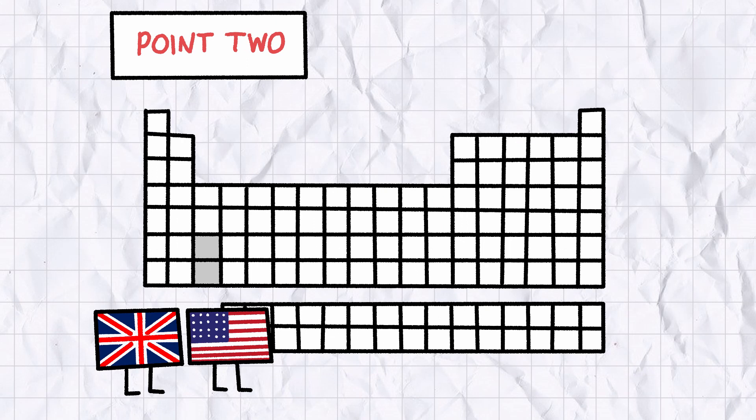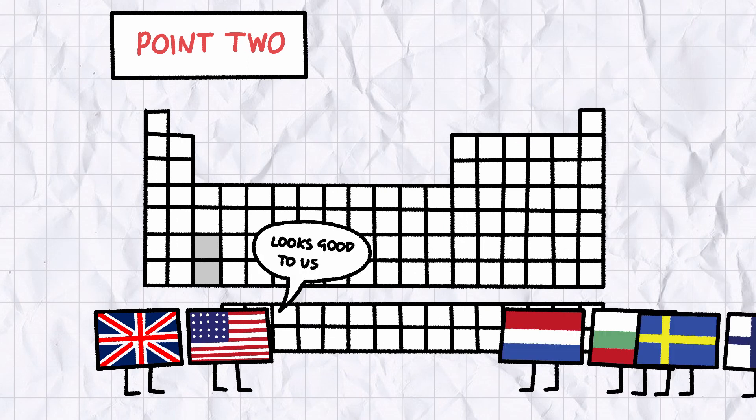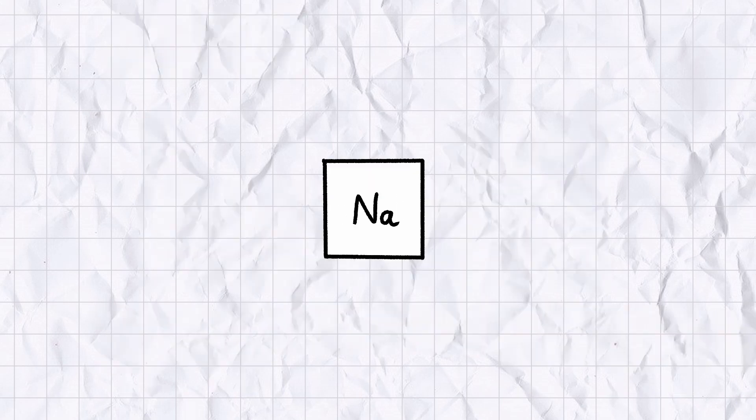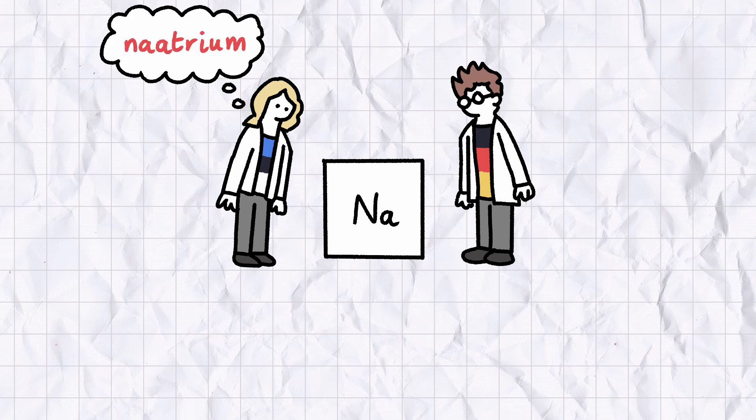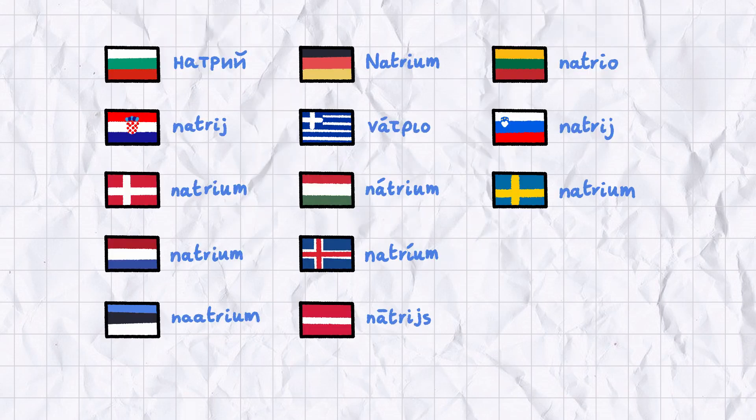Point two. Even if we rejigged every symbol on the table to align with the element's name in English, it'd be a bit of a raw deal for chemists in different countries. NA is a pretty unusual symbol in English, but it makes a lot more sense to chemists from Estonia and Germany, who call sodium natrium and natrium respectively. Similar translations exist for a handful of other European languages. Well, I say handful. Over half the official languages of the European Union, more like.